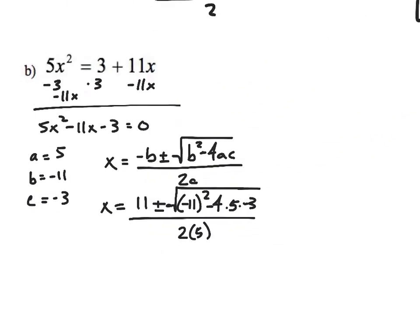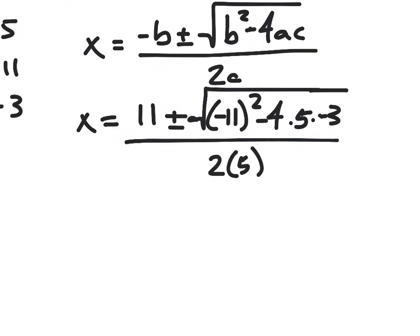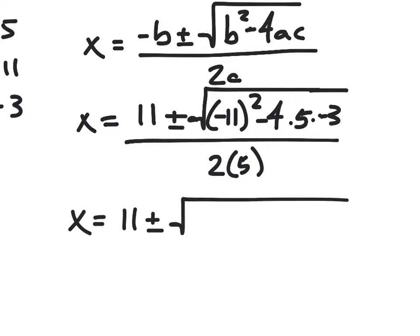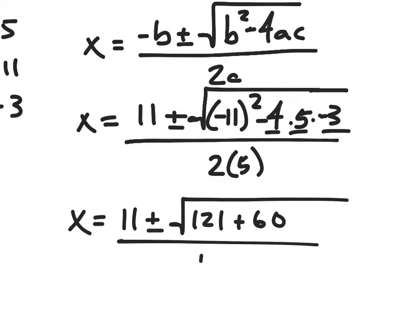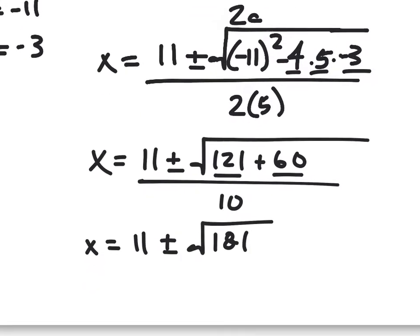So x is equal to opposite b — if b is already negative 11, the opposite of negative 11 is positive 11 — plus or minus the square root of negative 11 squared minus 4 times 5 times negative 3, all over 2 times 5. So: negative 11 squared gives 121, and negative 4 times 5 times negative 3 gives positive 60. So 121 plus 60 gives x equals 11 plus or minus the square root of 181, all divided by 10.